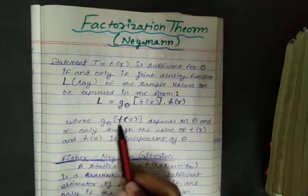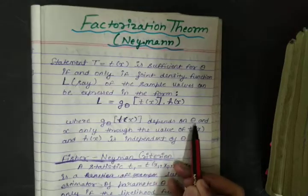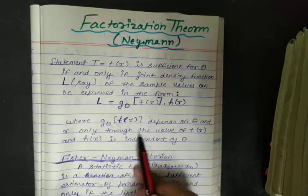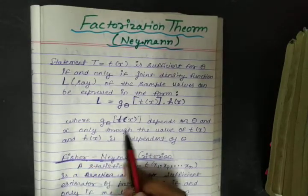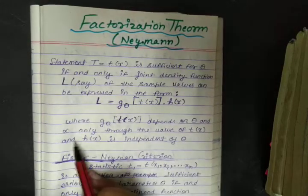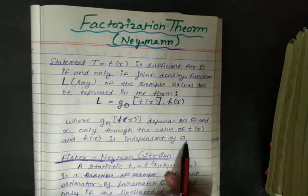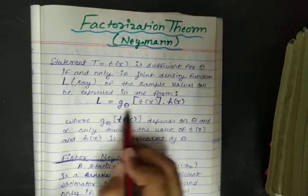Where g_θ[t(x)] depends on θ and x only through the value of t(x), and h(x) is independent of θ. So this value can be dependent on θ and x, and this value must have to be independent of θ.